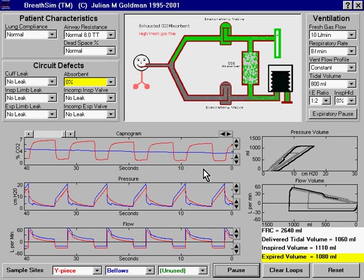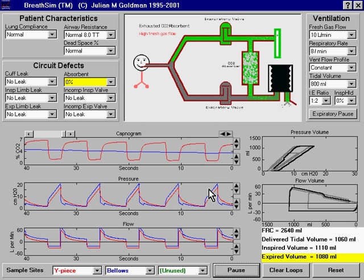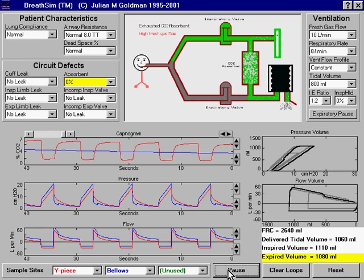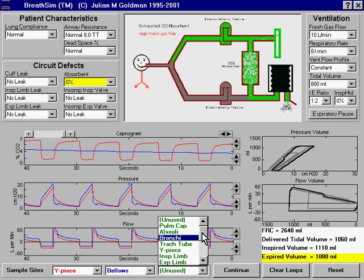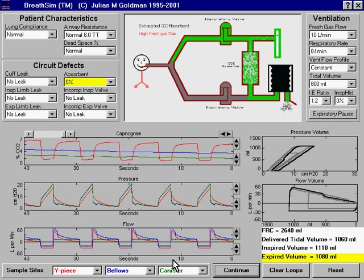We can add another tracing to add a bit more detail to the understanding of these events. I'm going to pause the simulation to make it easier to follow. We can add another tracing and look at the CO2 concentration inside the CO2 absorber itself, inside the canister.